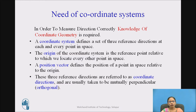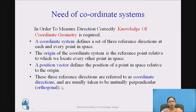A coordinate system defines a set of three different directions at each and every point in space. The origin of the coordinate system is the reference point relative to which we locate every other point in space. A position vector defines the position of a point in space relative to the origin. These three reference directions are referred to as coordinate directions.